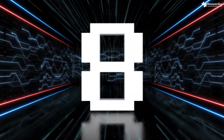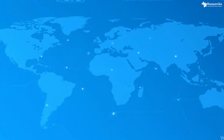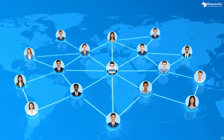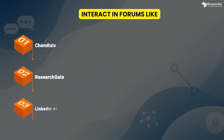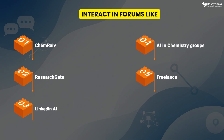The eighth step is to interact and create a community on LinkedIn. Once you have learned all these skills, interact in forums like ChemRxiv, arXiv, ResearchGate, and LinkedIn. There are many AI in chemistry groups — you can participate there. You can even freelance, work from home, and get those jobs. That's where chemistry forums and communities become important.